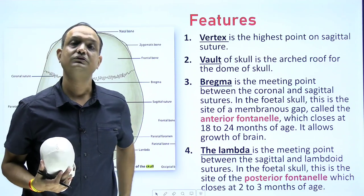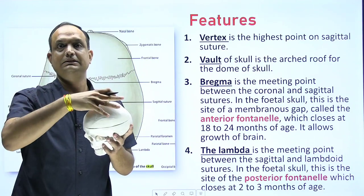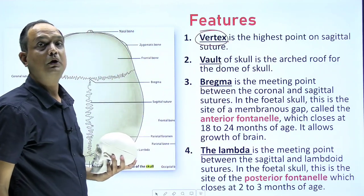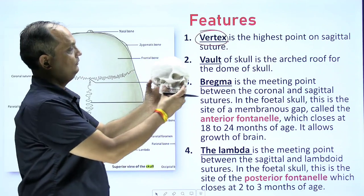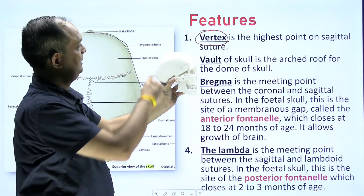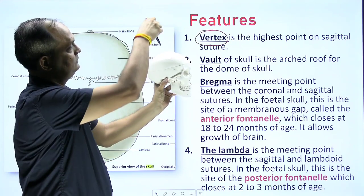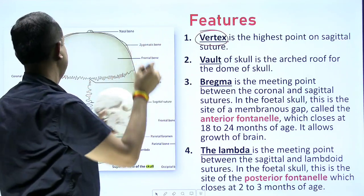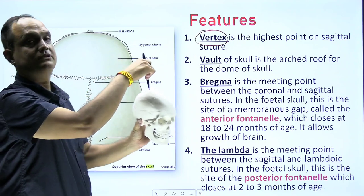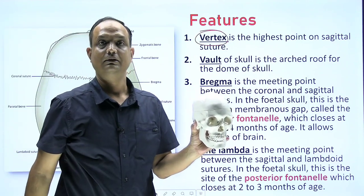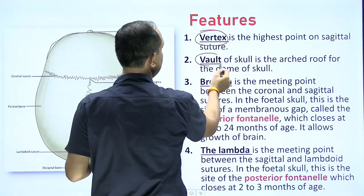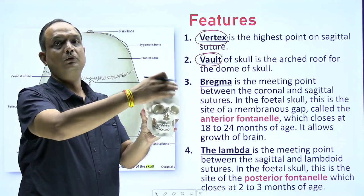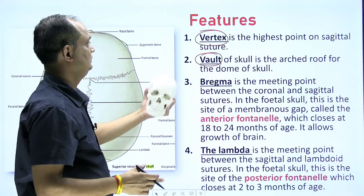What are the other features of norma verticalis? The first is vertex — it is the highest point of the sagittal suture. The second is vault — the vault of the skull is the arched floor or dome of the skull.